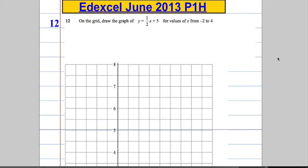Alright, so question 12. On the grid, we're asked to draw the graph of y equals a half x plus 5 for values of x from negative 2 to 4.